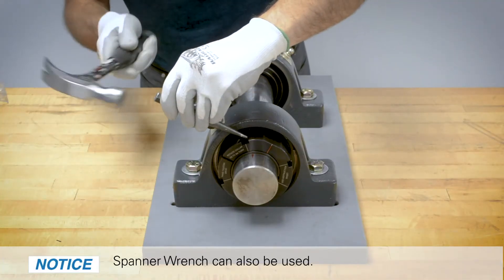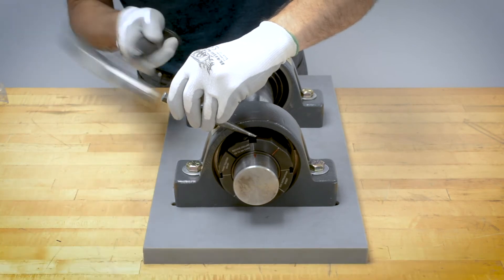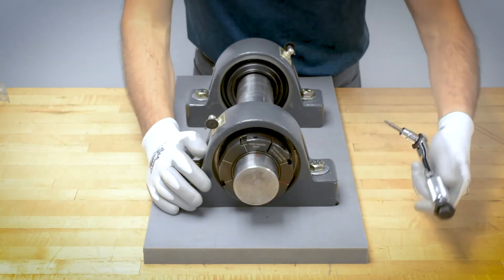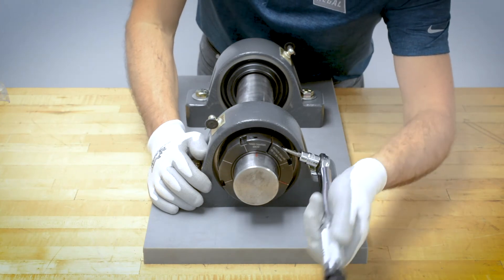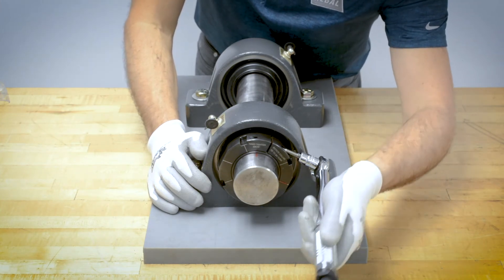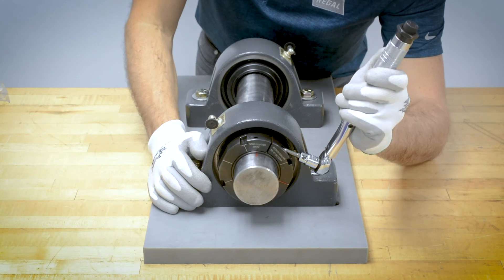Using a hammer and drift, rotate the collar nut the required amount. Tighten the cap screw on the collar to the torque specified in the instructions. The cap screw and split collar nut provide additional clamping force to improve lock reliability.